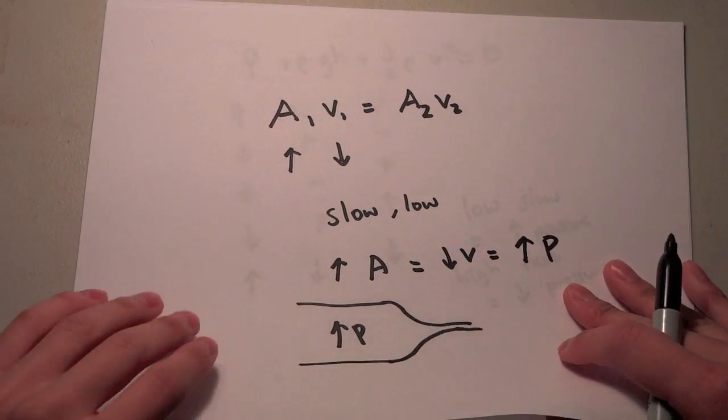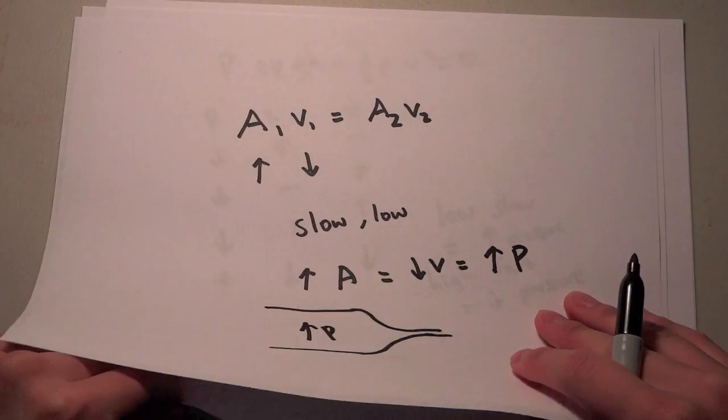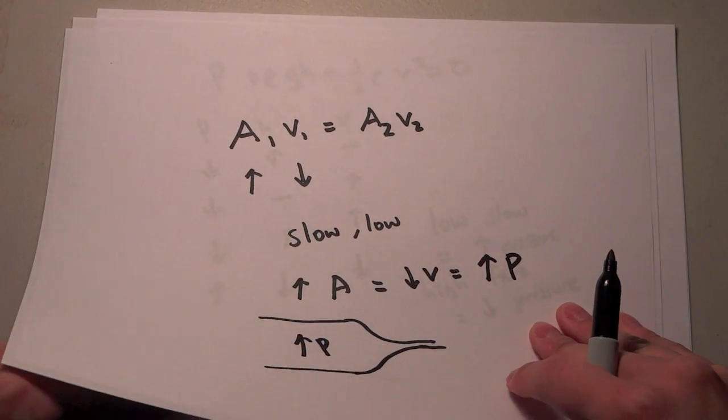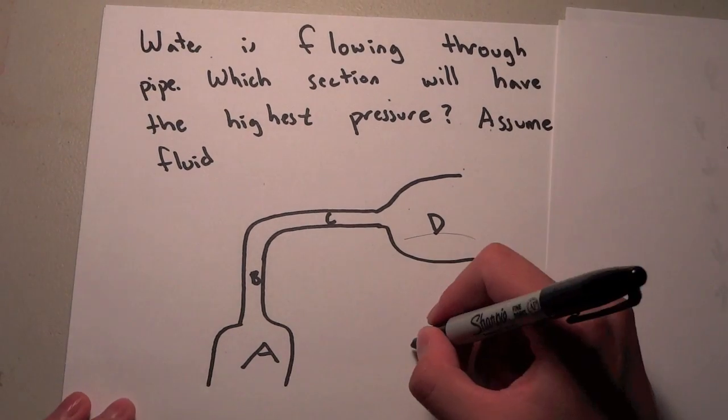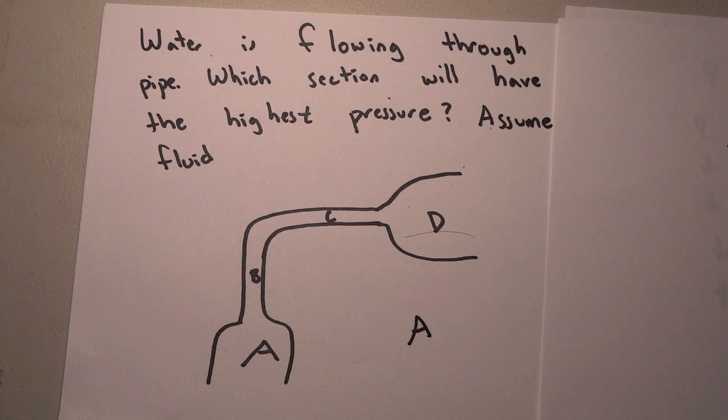So if we look back to our question, we want something that has the highest pressure. So we're going to want something that is fat and also low to the ground. And so we see that A fits that perfectly. A is fat, so it's going to have a very low velocity and also a very high pressure. But it's also low to the ground, so it's going to have an increased pressure. So everything is related to that.